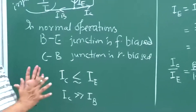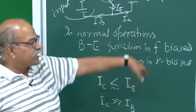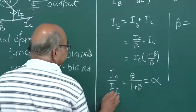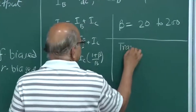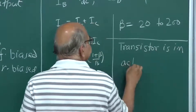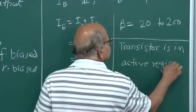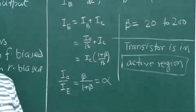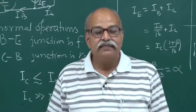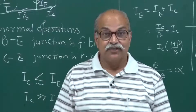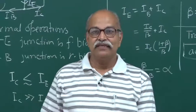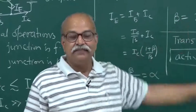This normal operation — when these conditions are met — is called the active region. In the active region, the base-emitter junction is properly forward biased and the collector-base junction is properly reverse biased, so it is ready to receive all those electrons coming from the emitter to the base with this fraction alpha, and the collector draws beta times IB.